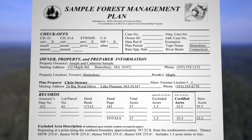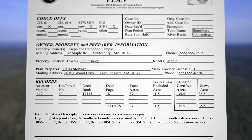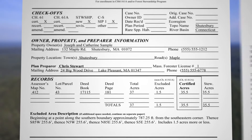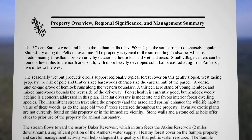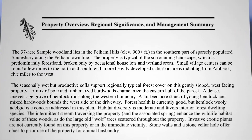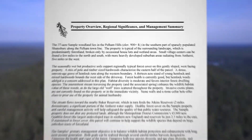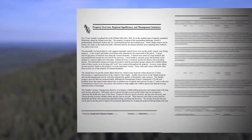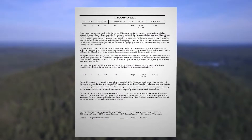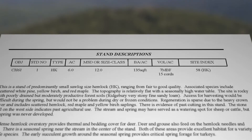A forest management plan at least contains the following: a title page which gives landowner information and a plat and lot number. The next section typically is a property overview covering acreage, size, watershed, and topography. Then you get into the details where the forest is broken down into stands or management units.